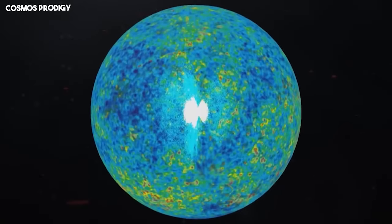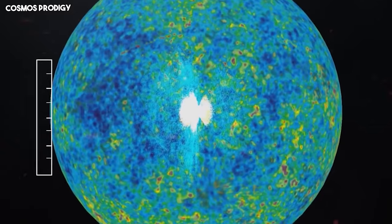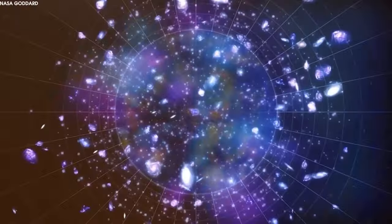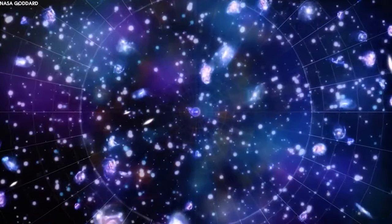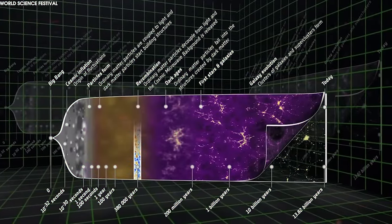Cosmologists previously believed this tension could be explained by accounting for dark and ordinary matter through the universe's evolution. However, despite taking into account the effects of ordinary matter and dark matter, Flamingo was unable to explain the S8 tension.